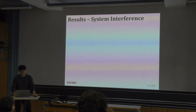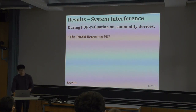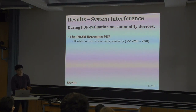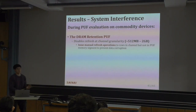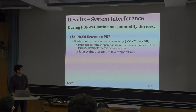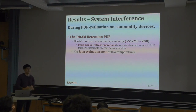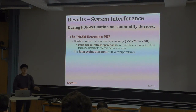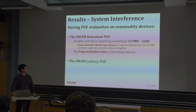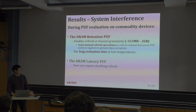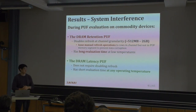Regarding system interference during PUF evaluation on commodity devices: the DRAM Retention PUF must disable refresh at channel granularity (on the order of gigabytes) and issue manual refresh operations to all rows in the channel not in the PUF memory segment to prevent data corruption. Its long evaluation time at low temperatures means constantly refreshing rows throughout evaluation, consuming significant DRAM utilization and bus bandwidth. The DRAM Latency PUF does not require disabling refresh and has a short evaluation time regardless of operating temperature.